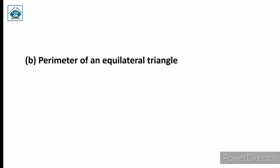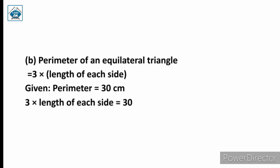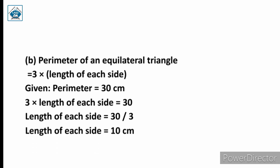For part b, the equilateral triangle: perimeter of an equilateral triangle is 3 into length of each side. The perimeter is again 30 centimeter because the string length is 30 centimeter. So 3 into length of each side equals 30, and length of each side equals 30 divided by 3, which is 10 centimeter.